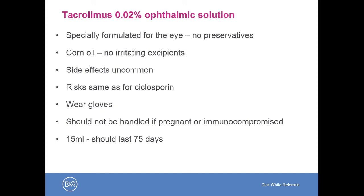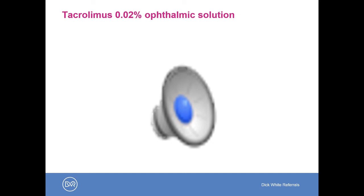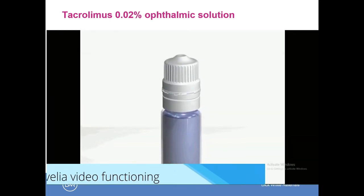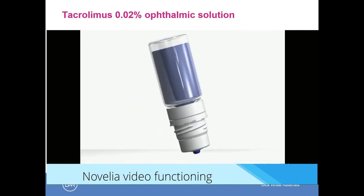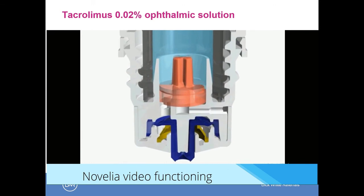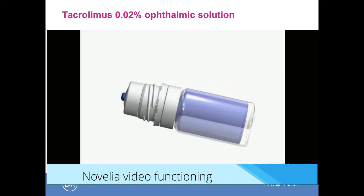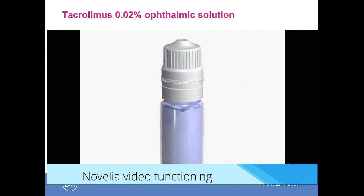I prefer the Bova product, which is a 0.02% solution in a 50 ml bottle lasting around 75 days — so although the initial outlay is there, it does last a long time and works out quite affordable. It has no preservatives, having been made by dissolving tacrolimus in corn oil, which is non-irritating to the eye, with no irritating excipients. The dropper has an internal airflow technology which allows the product to remain sterile without preservatives — the drop is applied, and air flows back into the device through a sterile filter ensuring sterility of the product.